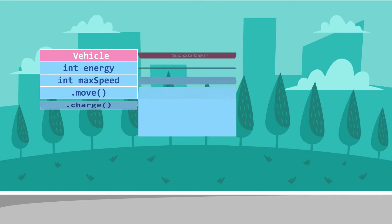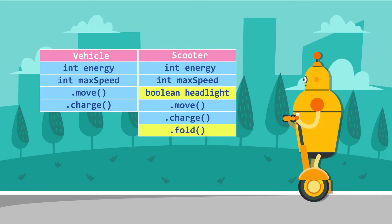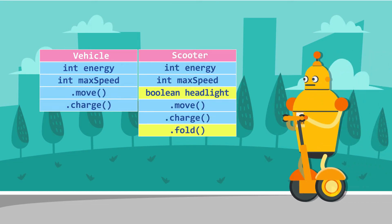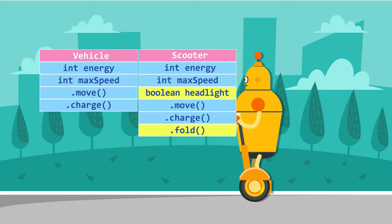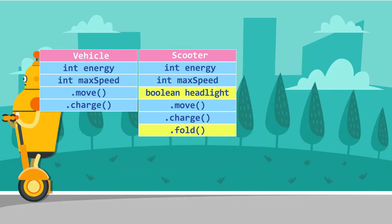The electric scooter uses electric power. It has a max speed of 16 miles per hour. It may or may not have a headlight. It can move, needs charging, and can fold.